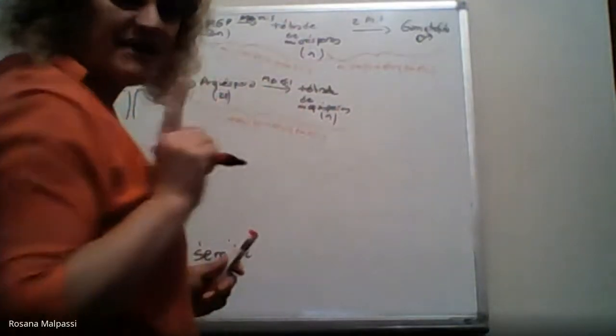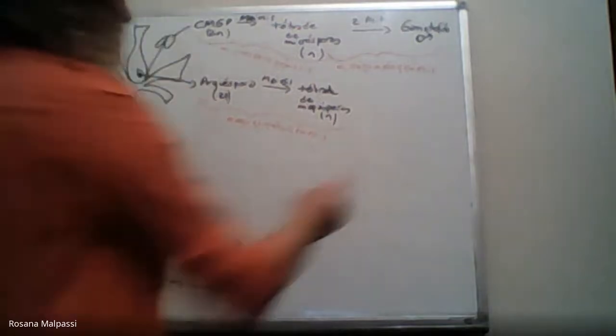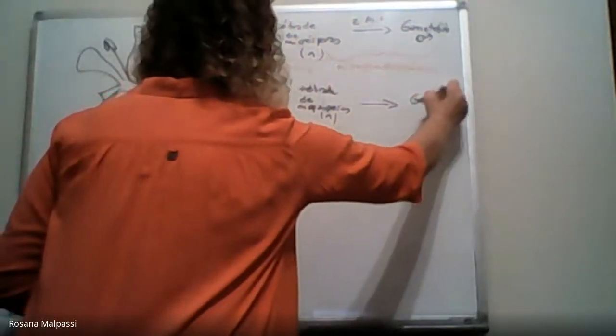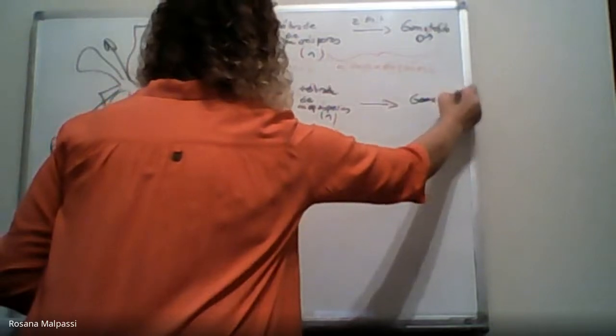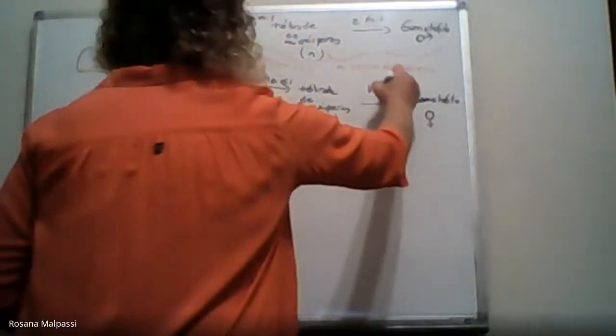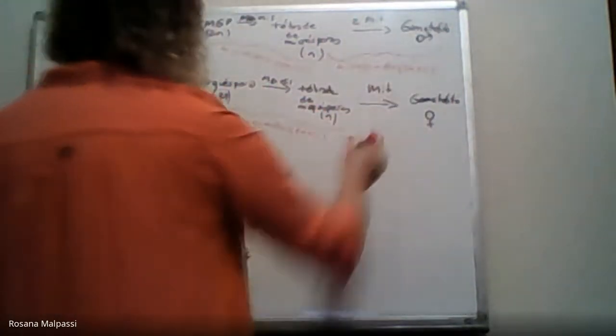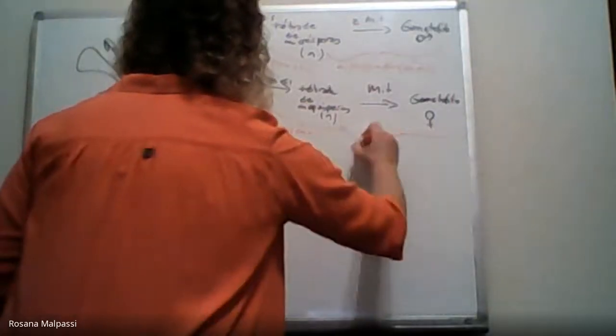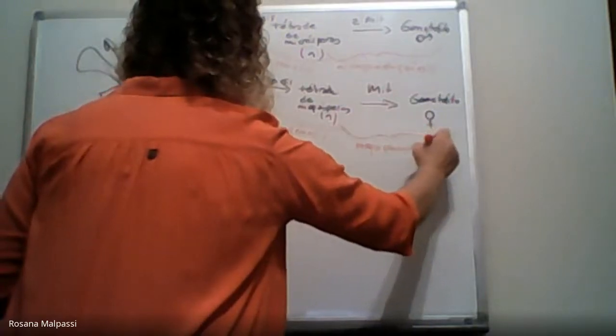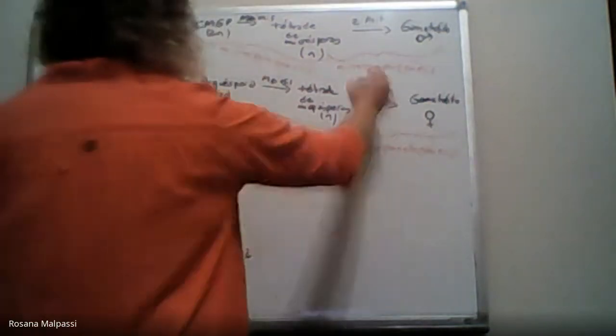Acá de las cuatro megásporas, una sola queda viable. Esa megáspora viable, a través de mitosis, va a formar el gametofito femenino. En un proceso, ahora sí, que se llama megagametogénesis. Tres divisiones mitóticas.